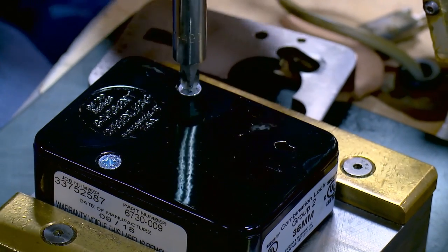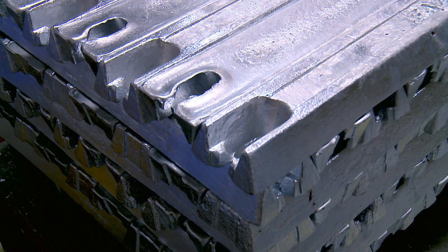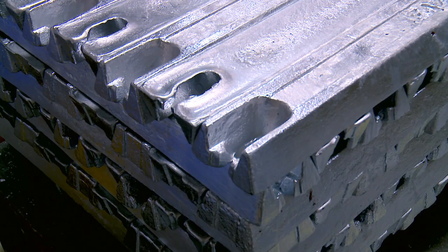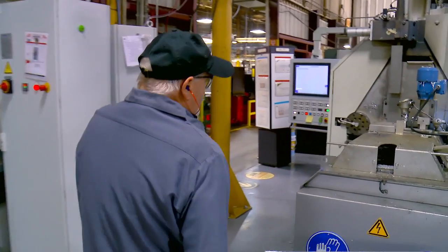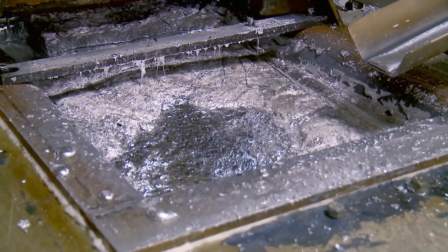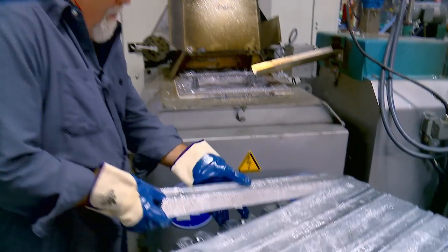But a crime-busting lock needs a safe housing. For this, they turn to a zinc alloy. A mixture of aluminum, magnesium, copper and zinc. It's strong and durable. And once melted at 427 degrees Celsius, perfect for die casting.